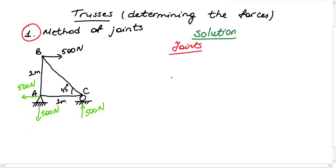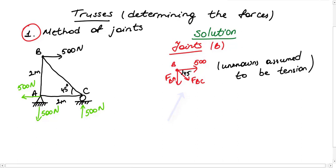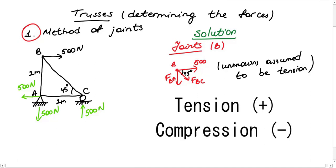We will start with joint B. You can start with whichever joint you want. First I check if I can find unknowns. I have two equations and I have two unknowns, so answer is yes. I want to note that every time I assume unknowns to be tension. Tension is shown like this where arrow points away from joint, but compression on the other hand points toward joint. Members in tension are denoted by positive sign, compression negative. If our assumption of tension for unknowns is incorrect, our answer will be negative, meaning that result is compression.